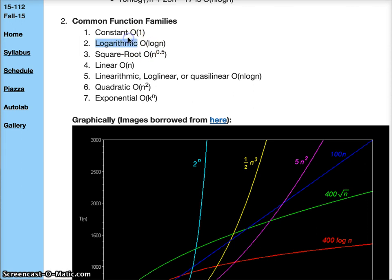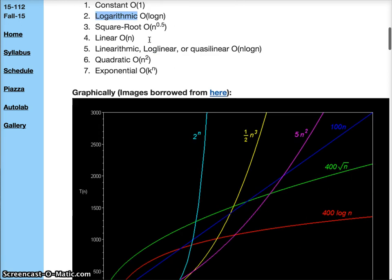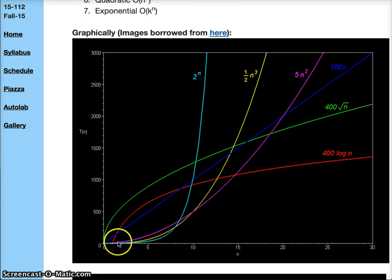Then we have logarithmic, where the size of the input is growing very large but the amount of work we do is very small. If we look at this, we can see in this example how the log line is red, and as our input size increases, the logarithmic growth goes very slowly.